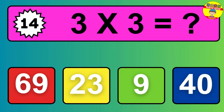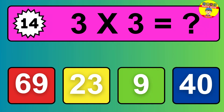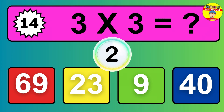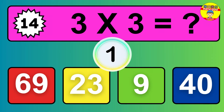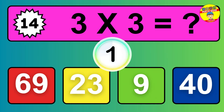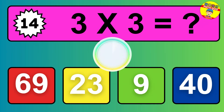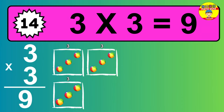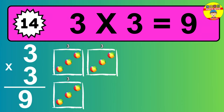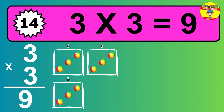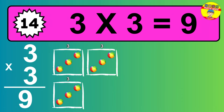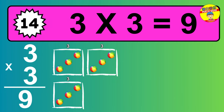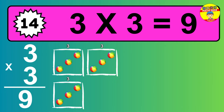Question 14. Three times three equals what? Nine balls.